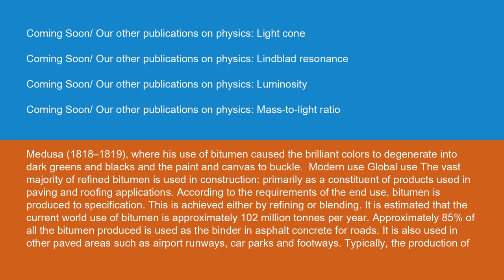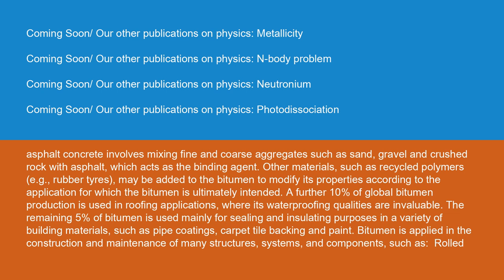The vast majority of refined bitumen is used in construction, primarily as a constituent of products used in paving and roofing applications. It is estimated that the current world use of bitumen is approximately 102 million tons per year. Approximately 85% of all the bitumen produced is used as the binder in asphalt concrete for roads. It is also used in other paved areas such as airport runways, car parks, and footways. Typically, the production of asphalt concrete involves mixing fine and coarse aggregates such as sand, gravel, and crushed rock with asphalt, which acts as the binding agent. Other materials such as recycled polymers — e.g., rubber tires — may be added to modify properties. A further 10% of global bitumen production is used in roofing applications, where its waterproofing qualities are invaluable.